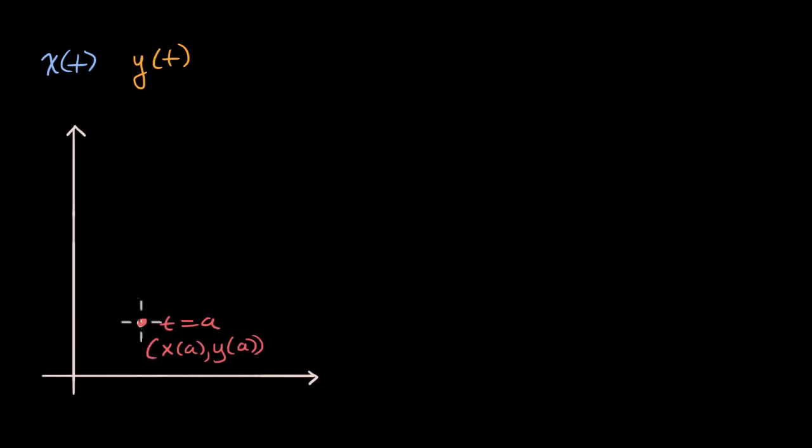And then as we increase from t equals a to t is equal to b, our curve might do something like this. So this is when t is equal to b. So this point right over here is x of b, comma, y of b.